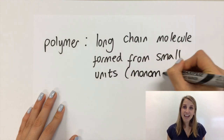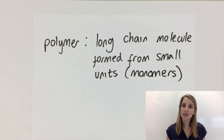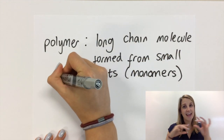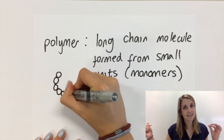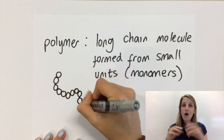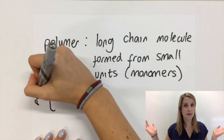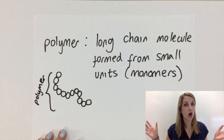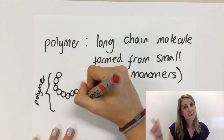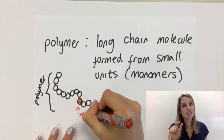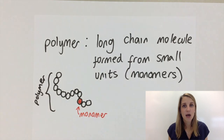The analogy that is often used is a necklace — the whole necklace is what would be described as the polymer, with each individual bead being a monomer in this analogy.